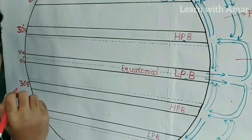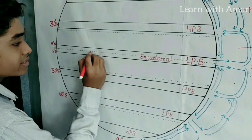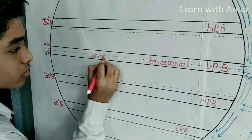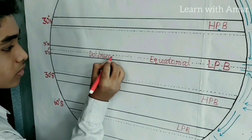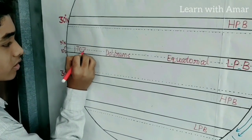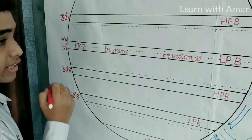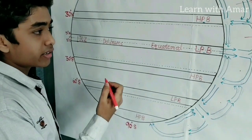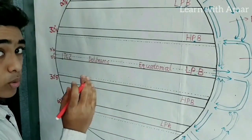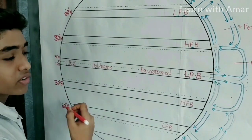Here the wind is sluggish — it is slow — so we also call this region doldrums. Also, this region is known as ITCZ, that is the Intertropical Convergence Zone, because the trade winds present on both sides converge in this zone.